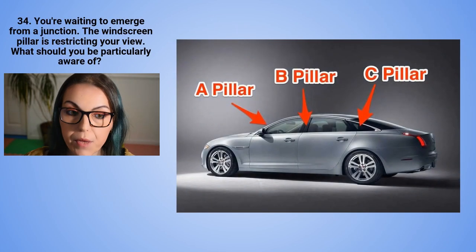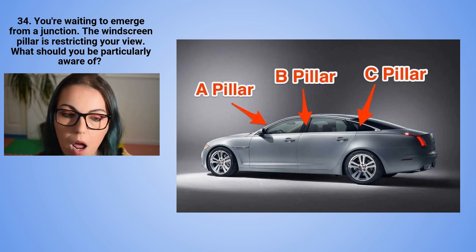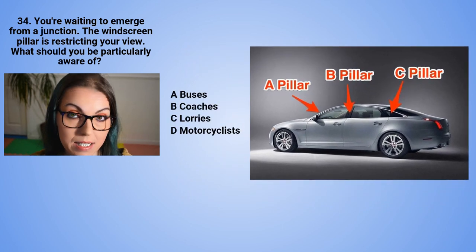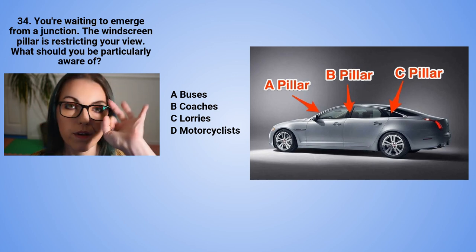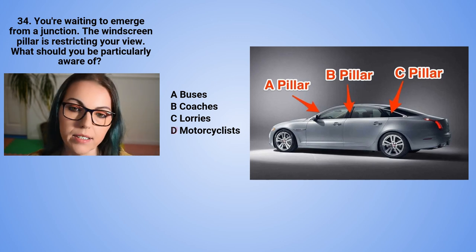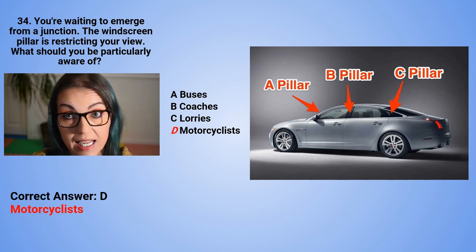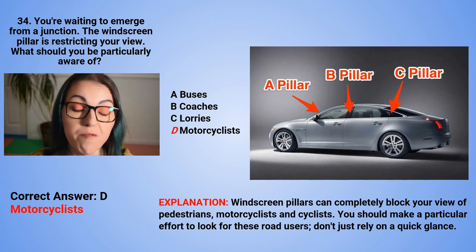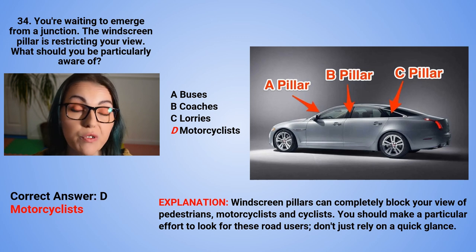Question 34: You are waiting to emerge from a junction. The windscreen pillar is restricting your view. What should you be particularly aware of? A. Buses. B. Coaches. C. Lorries. Or D. Motorcyclists. The correct answer is D — motorcyclists. Windscreen pillars can completely block your view of pedestrians, motorcyclists, and cyclists. Make a particular effort to look for these road users. Don't just rely on a quick glance.